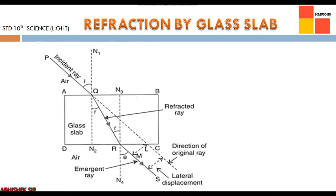Now moving to refraction by glass slab. In this figure we can see a rectangular glass slab ABCD. PQ is the incident ray, which enters the glass slab and becomes QR, the refracted ray, and then comes out as RS, the emergent ray. Dotted lines N1-N2 is the first normal and N3-N4 is the second normal. There is a dotted line from Q towards C showing the path light would have taken without refraction. The slight displacement between original and actual path is called lateral displacement.